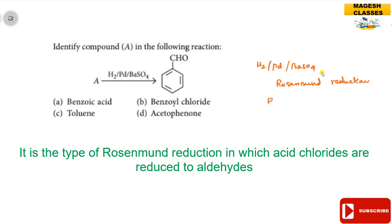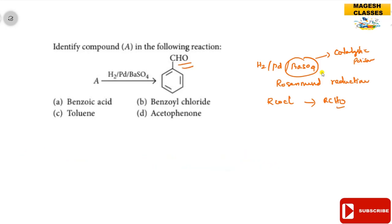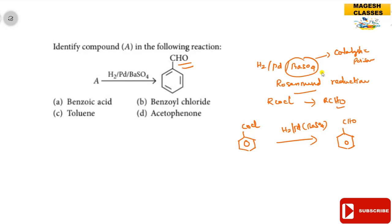Rosenmund reduction is the conversion of an acid chloride to an aldehyde. Barium sulfate reduces the catalytic activity of palladium, preventing over-reduction. Since the product is benzaldehyde, the corresponding acid chloride is benzoyl chloride (C₆H₅COCl). Benzoyl chloride treated with H₂/Pd-BaSO₄ gives benzaldehyde. The answer is B.